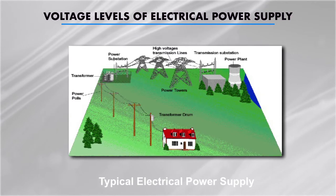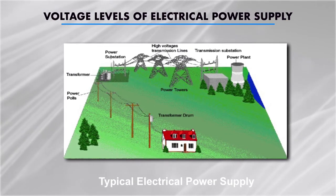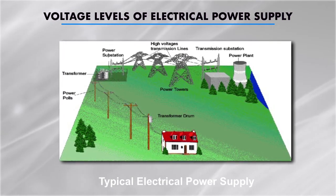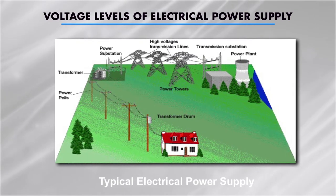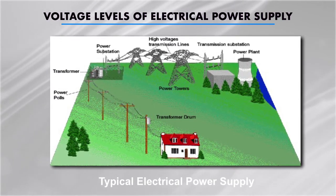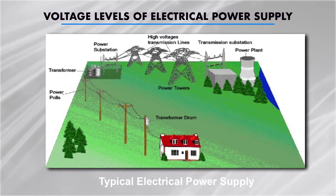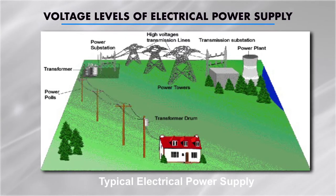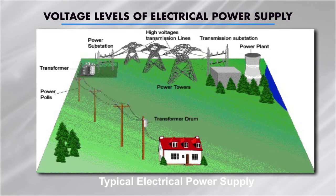Here I am showing you a typical electrical power supply system where you can see how power is generated at the plant and then transmitted up to the consumer end through various stages. The electrical power supply comprises generating units that produce electricity, high voltage transmission lines that transport electricity over long distances, low voltage distribution lines that deliver electricity to consumers, and substations which transform voltage to lower levels for distributing power to end users.